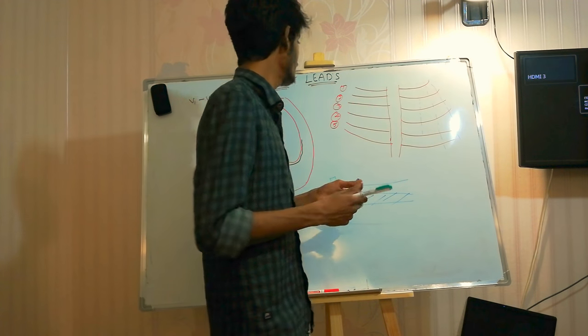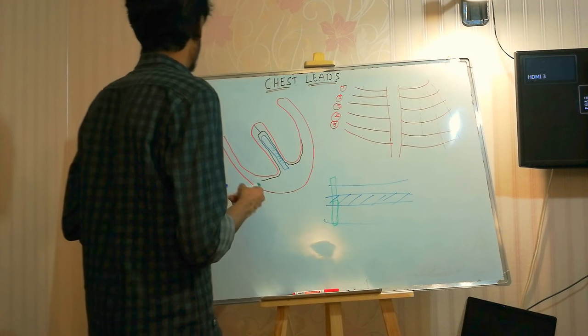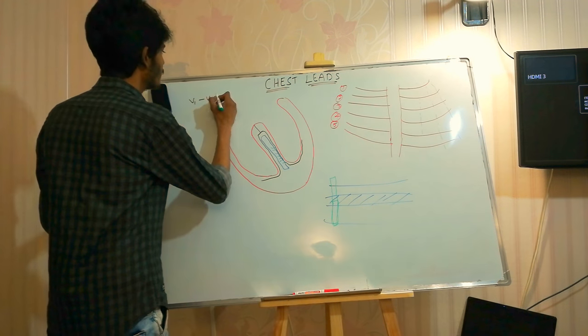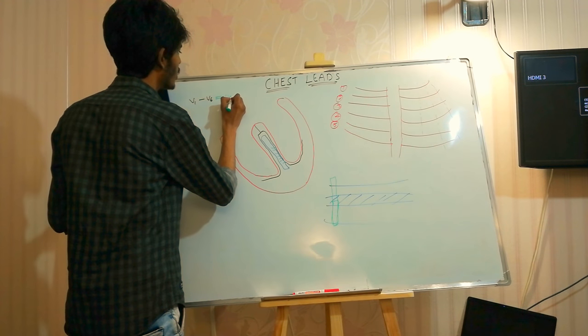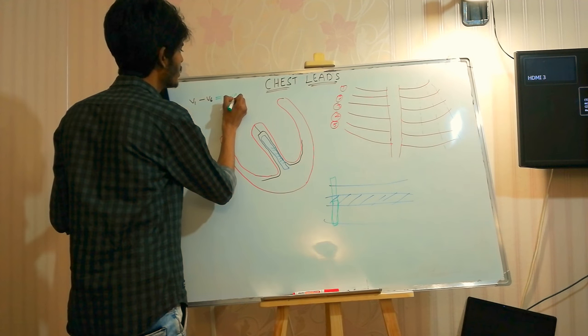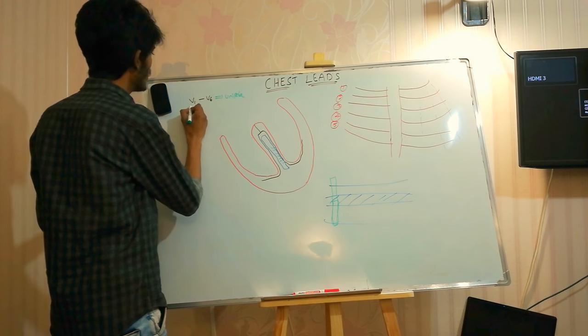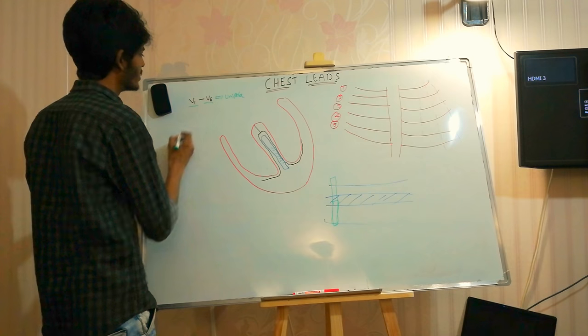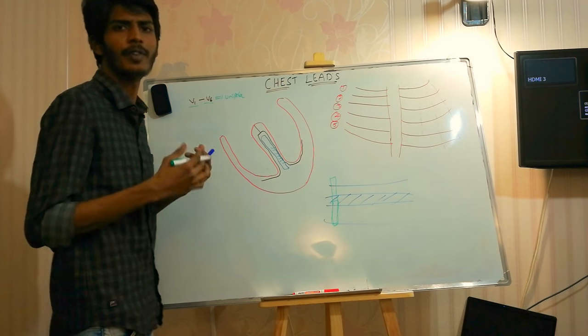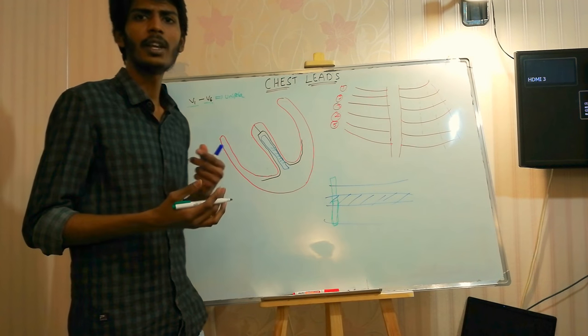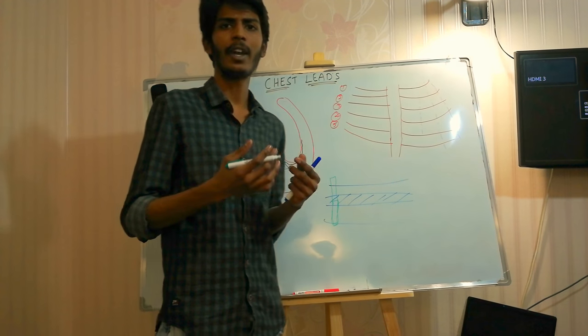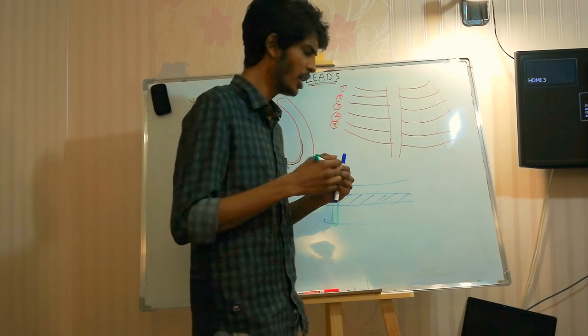Chest leads are unipolar leads. They include V1 to V6: V1, V2, V3, V4, V5, and V6.